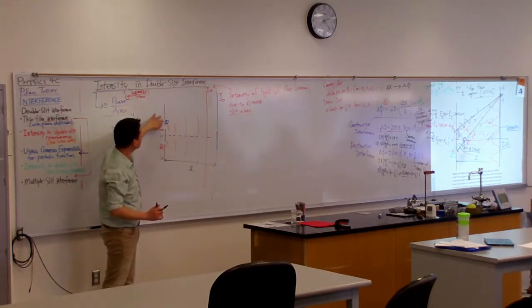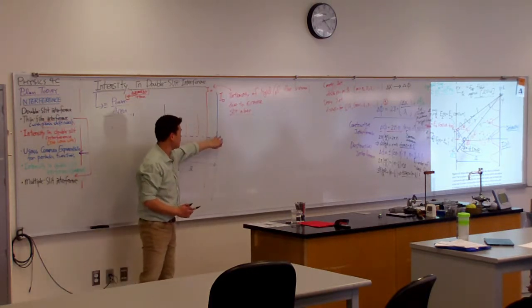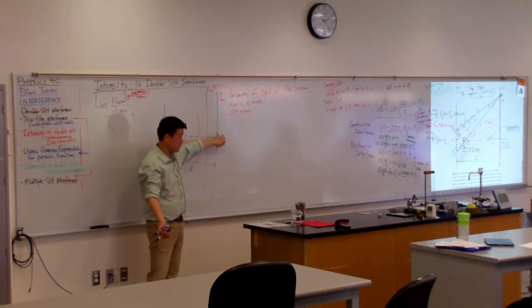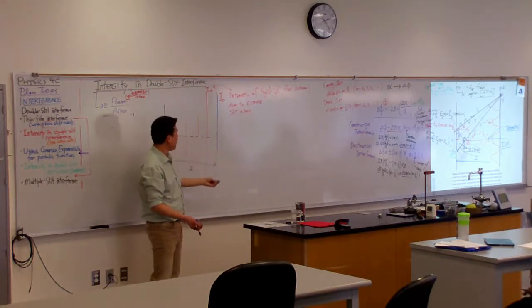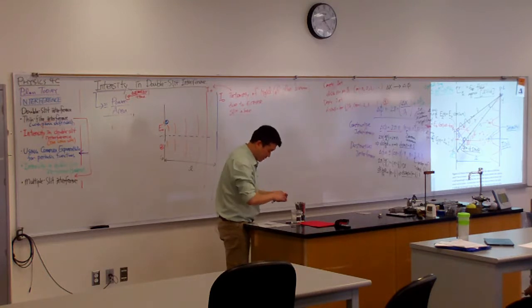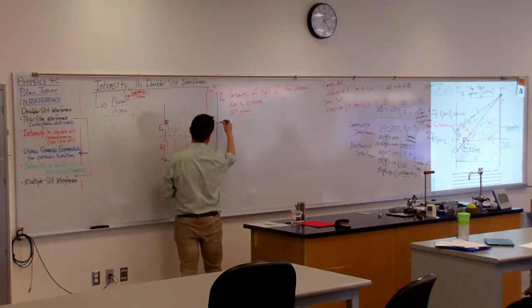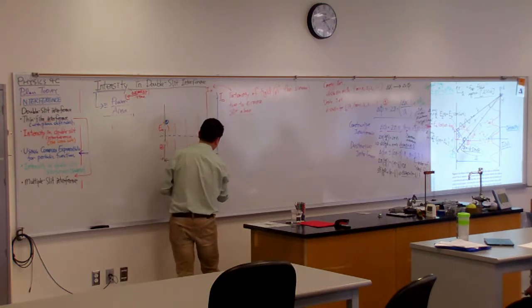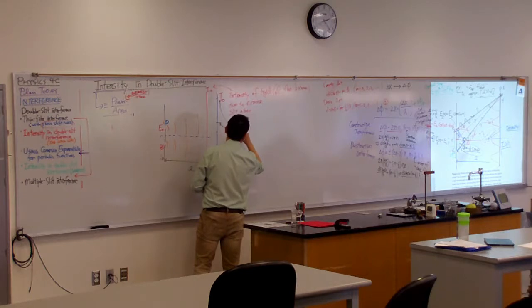Now, if I add the second slit, what do you think will happen to the intensity here? I mean, you know the general features, right? You are going to start seeing interference pattern. You are going to see places where the intensity actually goes to zero. So let me just mark those places so that we are going to talk about that later. So there are going to be some places where you get destructive interference.